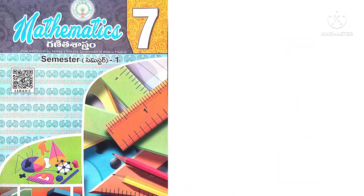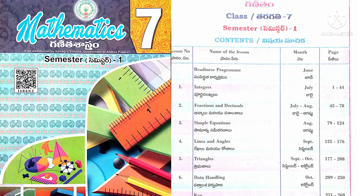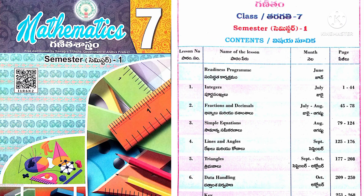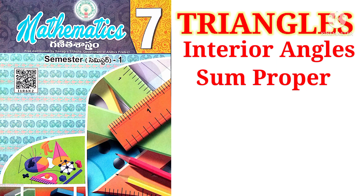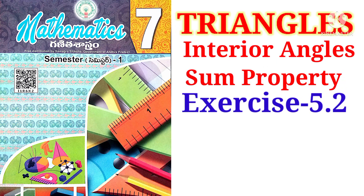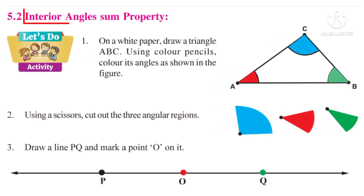Welcome to Shekhar Maths. Today we are going to learn 7th Class Mathematics Semester 1, 5th Chapter, Triangles — Interior Angles Sum Property, Exercise 5.2. Let us do an activity.